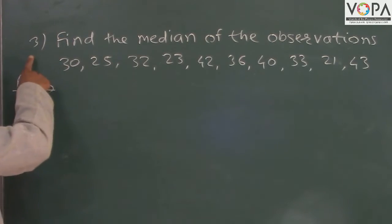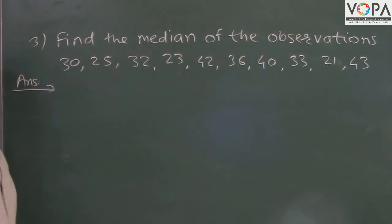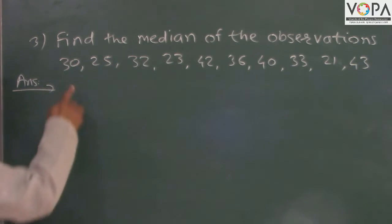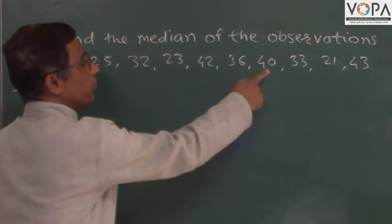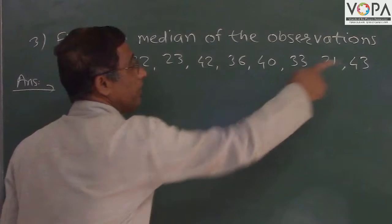Now we take example number 3. Find the median of the observations: 30, 25, 32, 23, 42, 36, 40, 33, 21, 43.